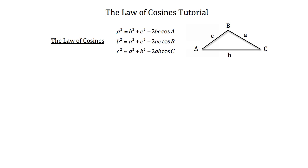Now, if you knew the three side lengths of a triangle, you could use those to solve for any missing angle. Or if you knew one angle and two side lengths, you could solve for the missing side length. So let's take a look at an example problem right now.